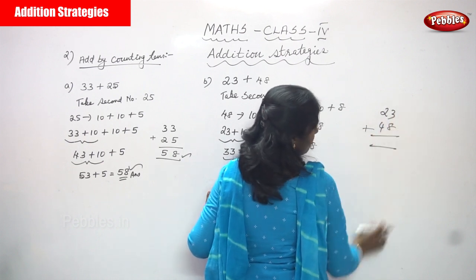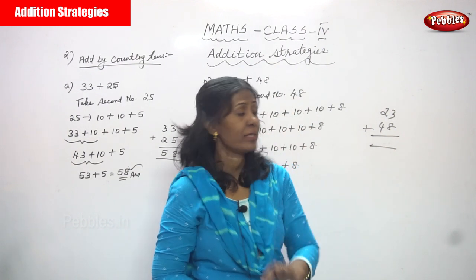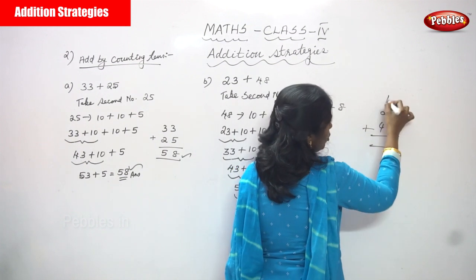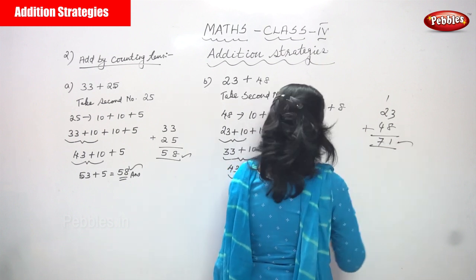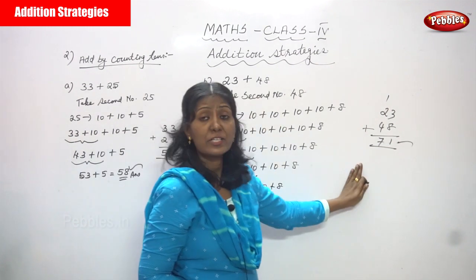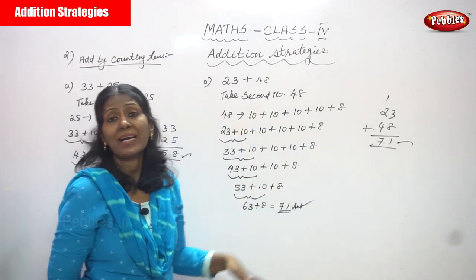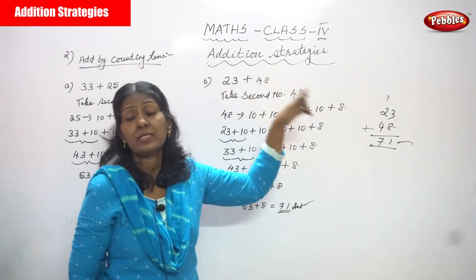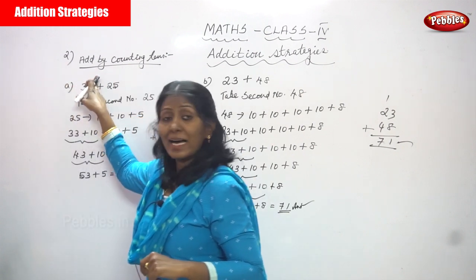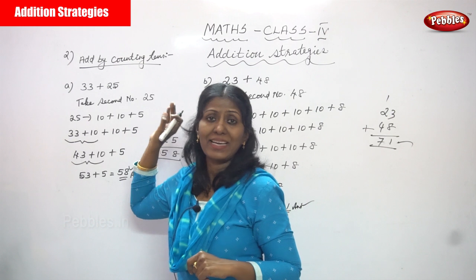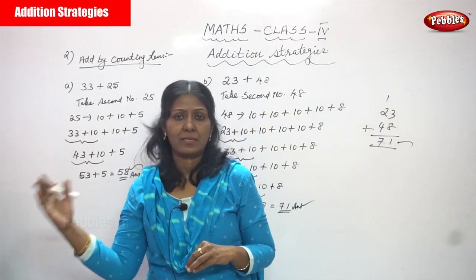For 23 plus 48 using general addition: 3 plus 8 — hold 3 in mind, count 8 on fingers — gives 11, so write 1 and carry 1. Then 2 plus 4 plus 1 carried is 7, giving 71. Both answers are correct. The strategy used here is add by counting tens — split the second number into 10s.